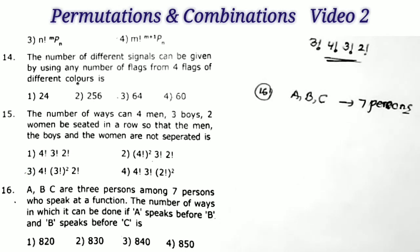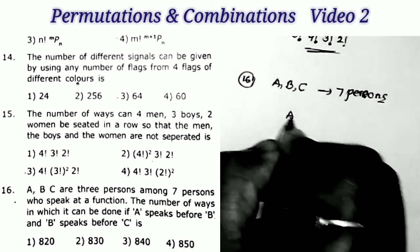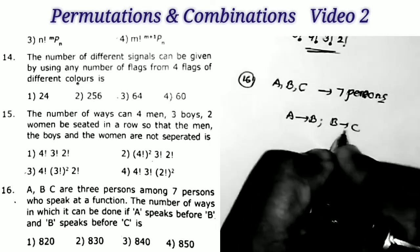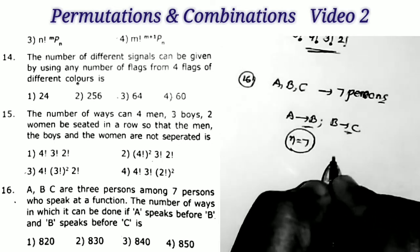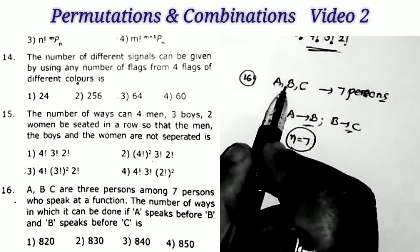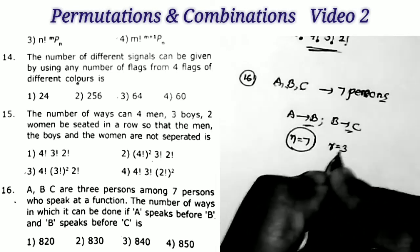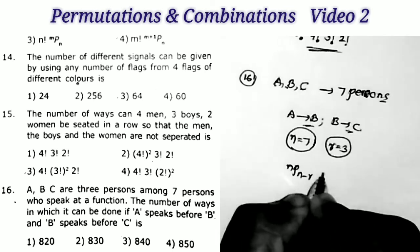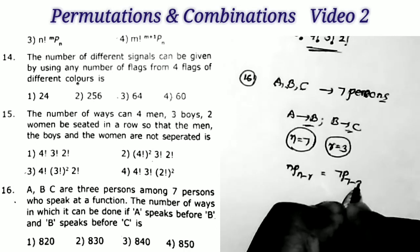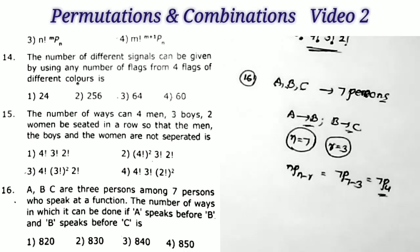Sum number 16: ABC are three persons among seven persons who speak at a function. Find the number of ways it can be done if A speaks before B and B speaks before C. When we have the condition A speaks before B and B speaks before C, we have a direct formula. Number of persons N equals seven, and the condition involves three persons ABC so R equals three. The formula is N P (N minus R), giving us 7P4.